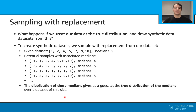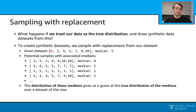Here comes sampling with replacement. With this approach, we treat our initial data as the true distribution, and then we draw synthetic datasets from it using sampling with replacement. Let's assume this is our dataset with a median of five. We draw samples from this by putting these samples back into the original dataset every time. As you can see, we may have some duplicates because we are sampling with replacement. We continue drawing second, third samples, and so on. The distribution of these medians gives us a guess at the true distribution of the medians over a dataset of this size.